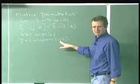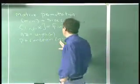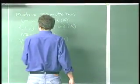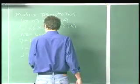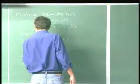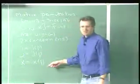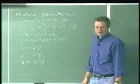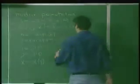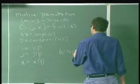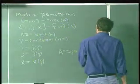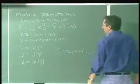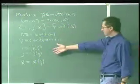Rand perm nz. Then you do i equals i of p, j equals j, x. So you randomly jumble up your triplets. Now if you do A equals sparse of i, j, x, m, n, it'll recreate the matrix. This pulls apart a sparse matrix and puts it back together again.